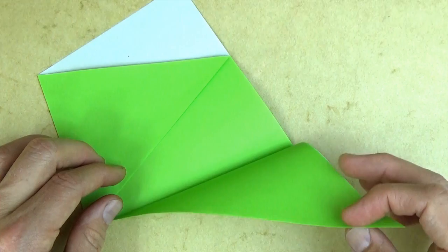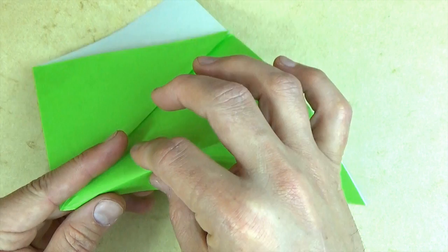And unfold, and we're going to reverse this fold, so we're going to make it a mountain fold. So just fold the flap behind on the existing crease.